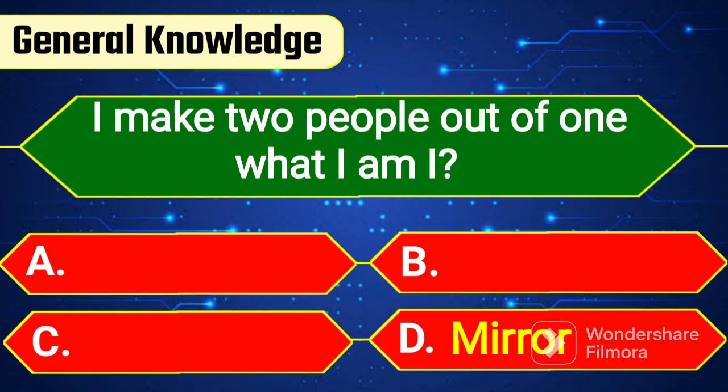I make two people out of one — what am I? The answer is Option D: Mirror.